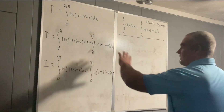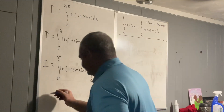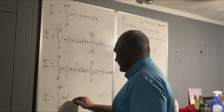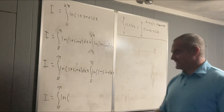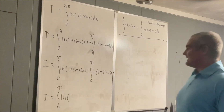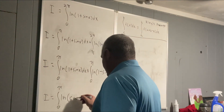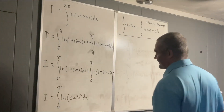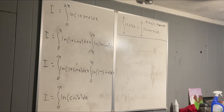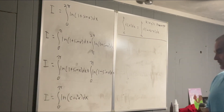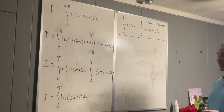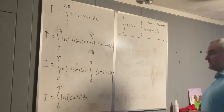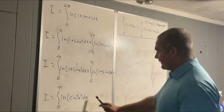Now we put them back together. Since we're adding the integrals, we multiply the arguments inside the natural log, giving us the integral from 0 to π of the natural log of (1 minus sine²x), which is cosine²x. It might be tempting to bring the 2 outside, but you really shouldn't — on the interval 0 to π, cosine is not always positive, and you don't want to take the natural log of negative numbers. So we leave it as ln(cos²x).